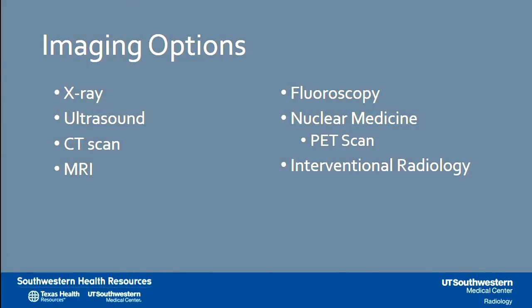For the imaging workup, there are several options. The items on the left side of your screen — x-ray, ultrasound, CT scan, and MRI — are the ones I'm going to focus on. The modalities on the right side of the screen are also very useful in working up entities that can contribute to abdominal pain, but those tend to be more specific, targeted studies for patients with specific conditions that I'm not going to focus on today.